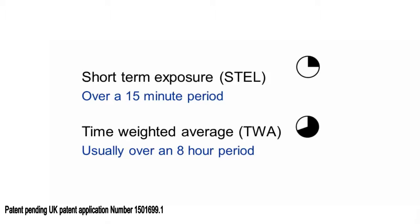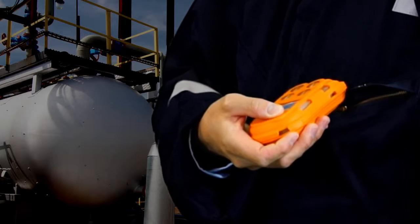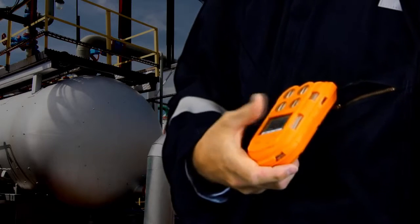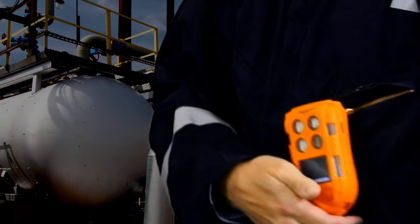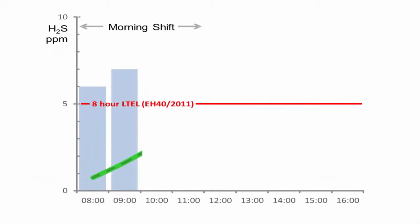When turned on, the calculation of TWA by many portable gas detector units assumes it's the beginning of a work shift. However, if the unit was switched off during a shift, for example during a break, this could risk overexposure of the worker.